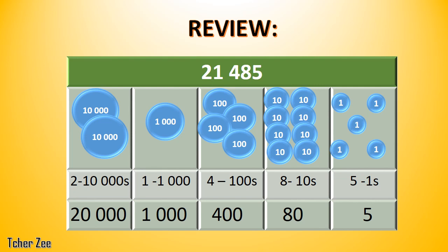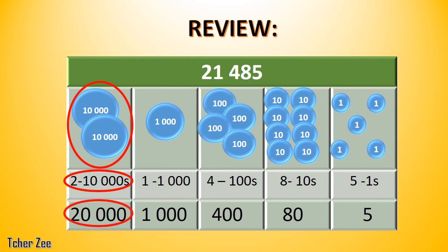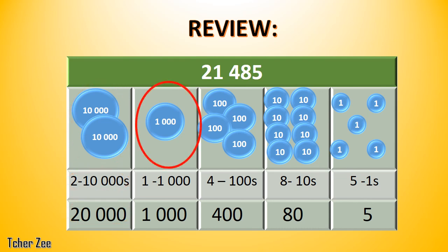But before we start, let's have a review of our topic last time. We said that we could imagine how big a number is by representing it with discs. So 21,485 could be represented by 2 discs of 10,000, or 2 ten-thousands. Its value is 20,000. And 1 disc of 1,000, or 1 one-thousand. Its value is 1,000.